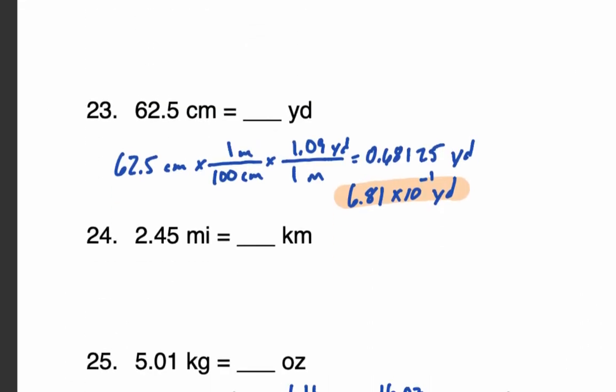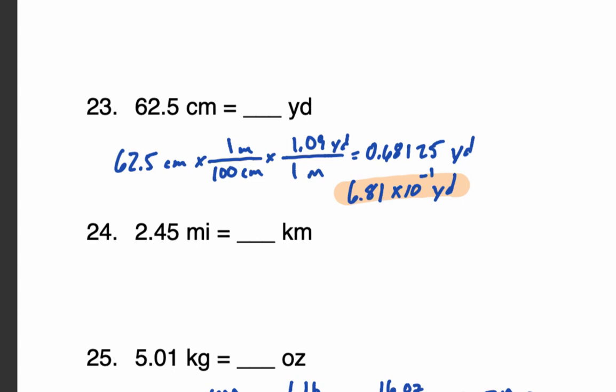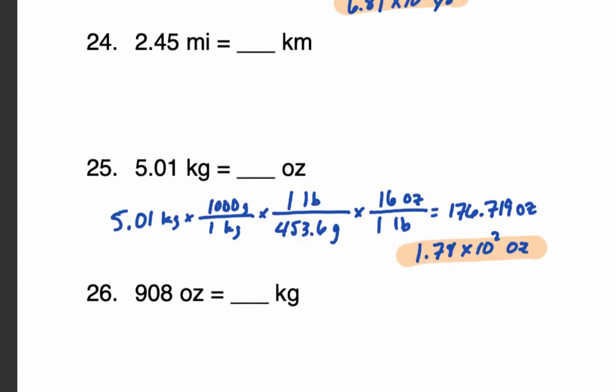In number 23, three significant digits — we end up with 6.81 × 10⁻². In number 25, 5.01 has three significant digits, so we need three in our final answer. We get 1.78 × 10² — and now that I look at it, it should actually be 1.77.